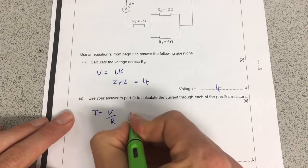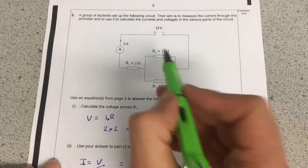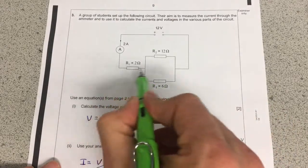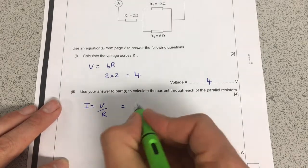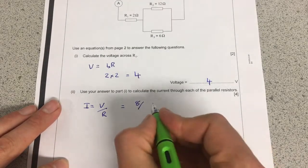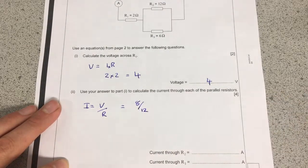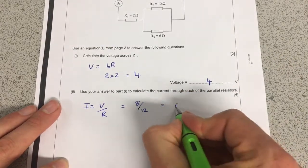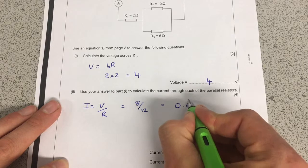So we'll need to do this twice. And as I mentioned before, we've got 8 volts across these because 4 has been used up over here. So that's going to be 8 divided by 12, which is the resistance from the diagram. And that's going to equal 0.6 recurring.